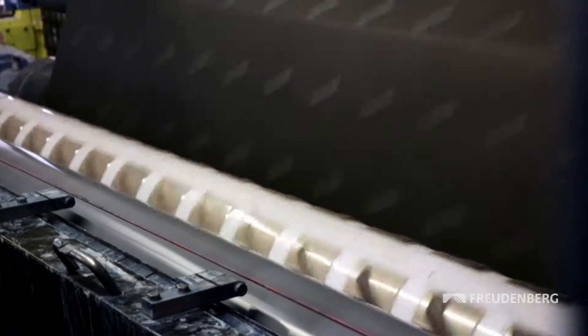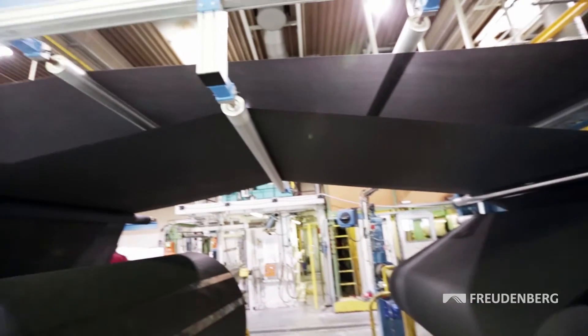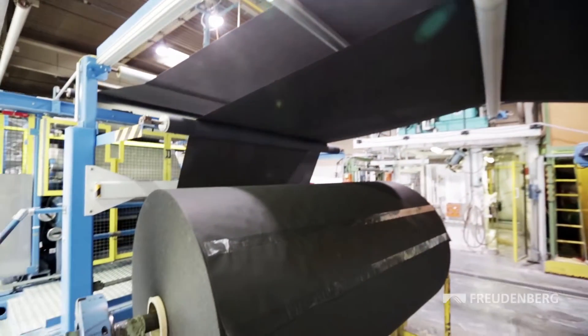SoundTex is dyed black, printed with its brand logo, and coiled onto huge rolls. 6,000 meters of fabric per roll, each weighing half a metric tonne.